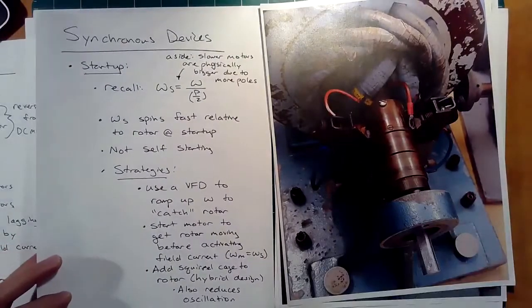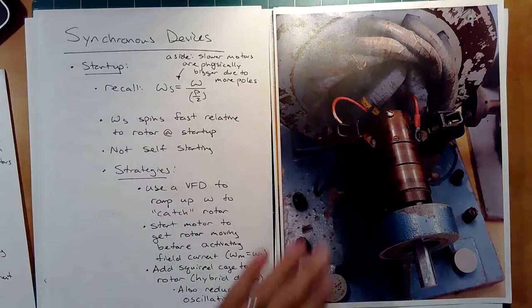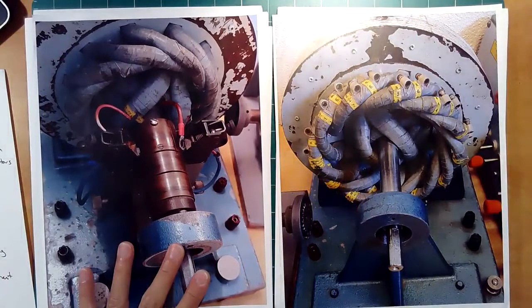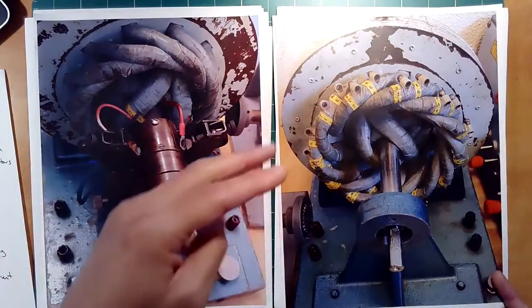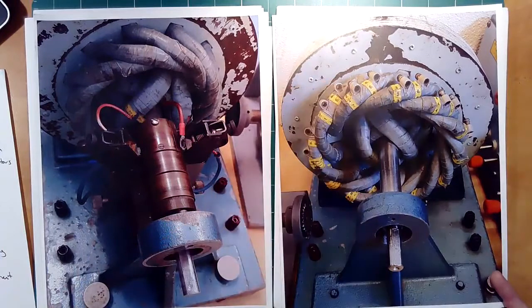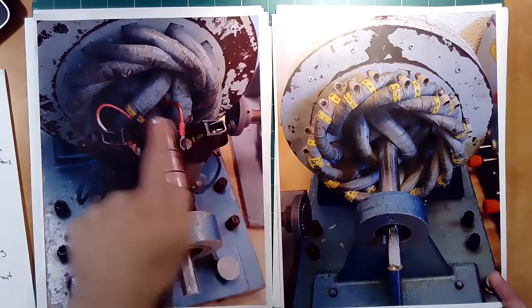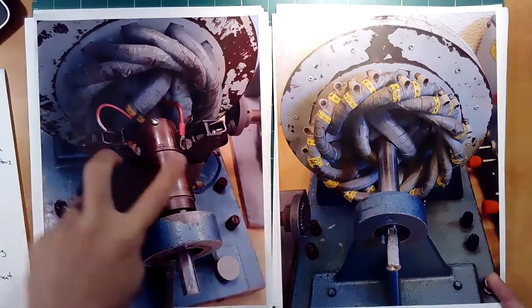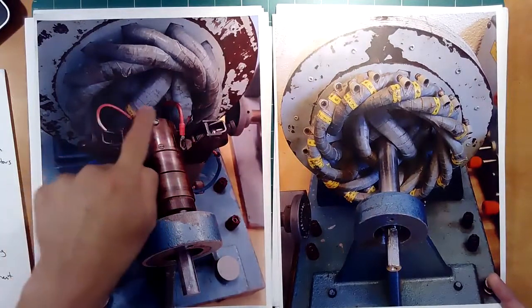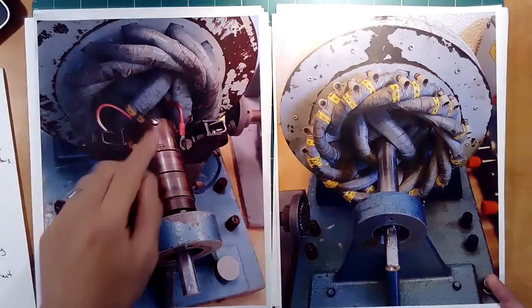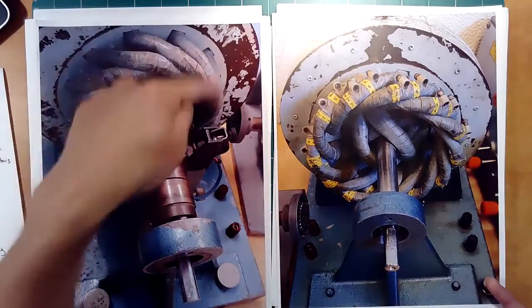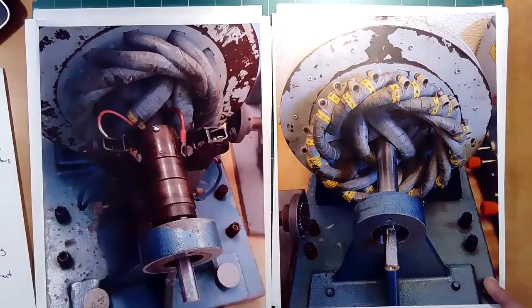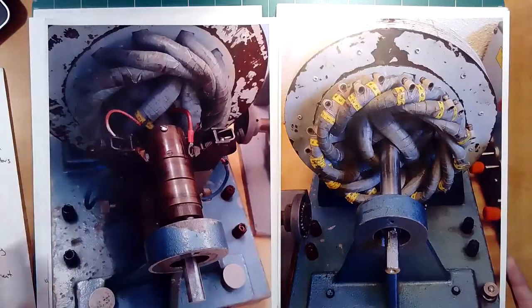Looking at a picture of a synchronous device, we have slip rings and the stator where the three-phase stator coils connect. The rotor has DC current applied to it via slip rings to create a permanent magnet-like behavior — in this case four poles based on how it's wrapped. The rotor then locks into the spinning magnetic field from the stator.